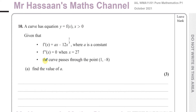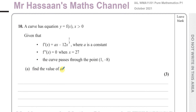We're told that f'(x) is equal to ax minus 12x to the power of a third, where a is a constant. f'(x) means the first differential of the function f(x), and f''(x) means the second differential when you differentiate it twice. We're told f''(x) equals zero when x is 27, and that the curve passes through the point (1, -8). We need to find first the value of a.